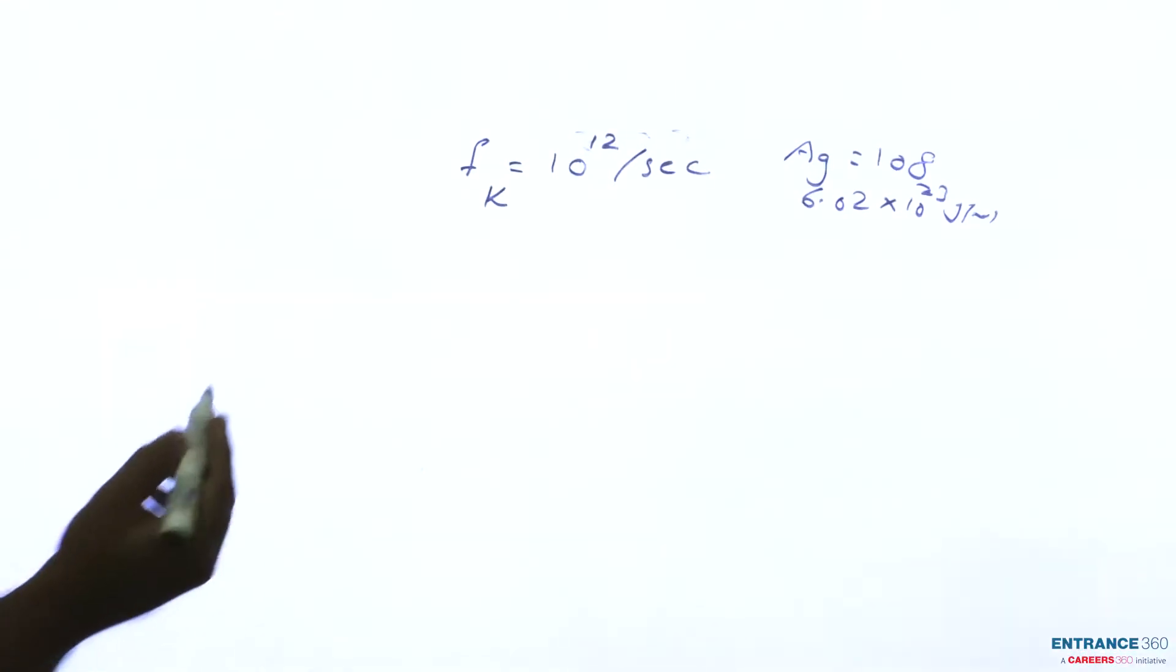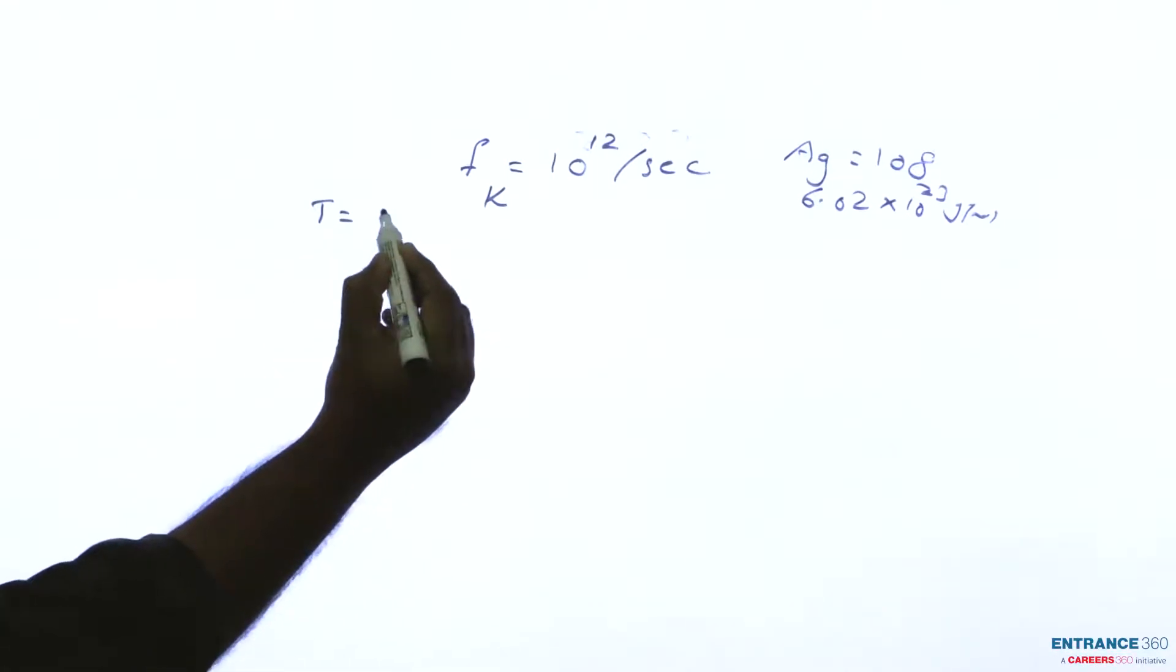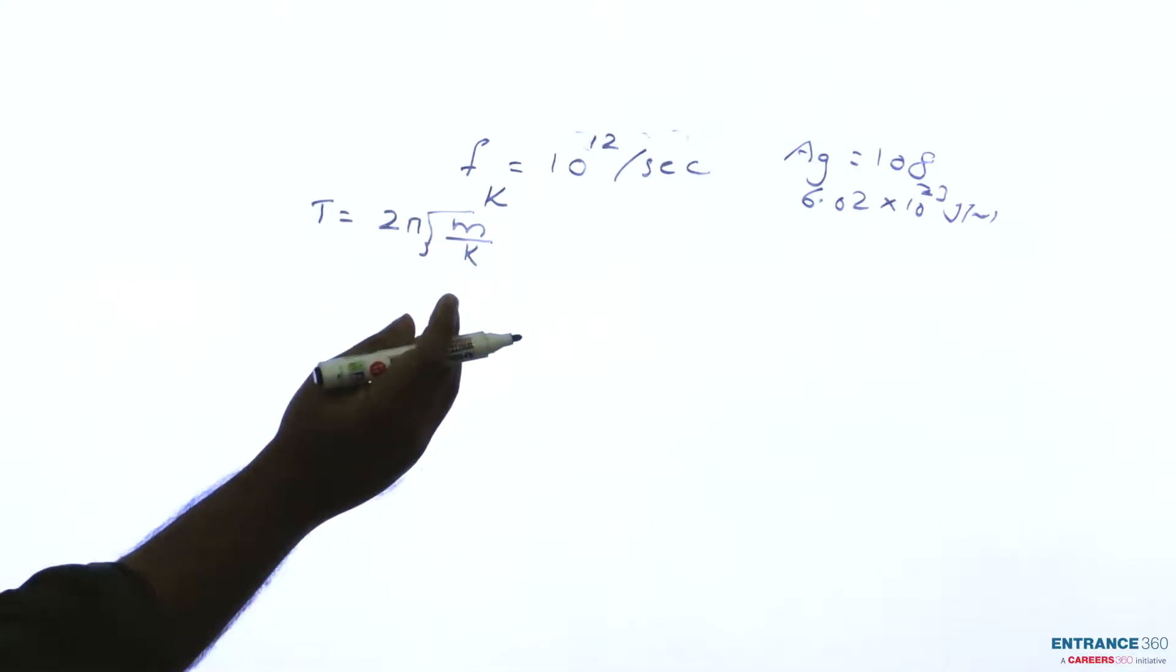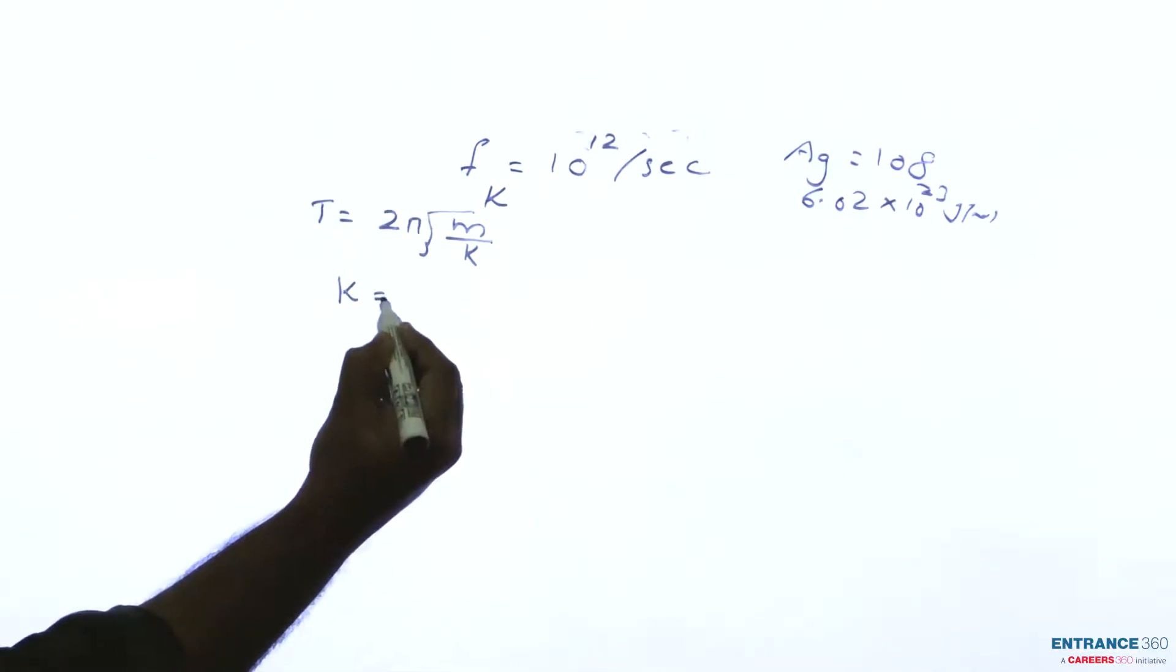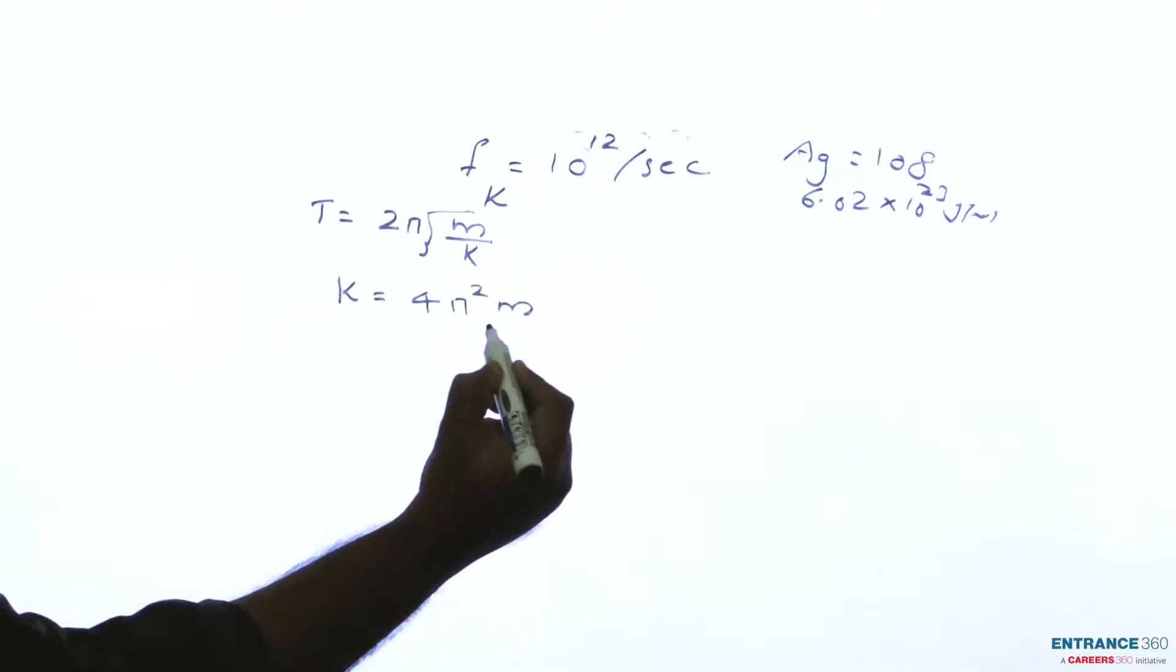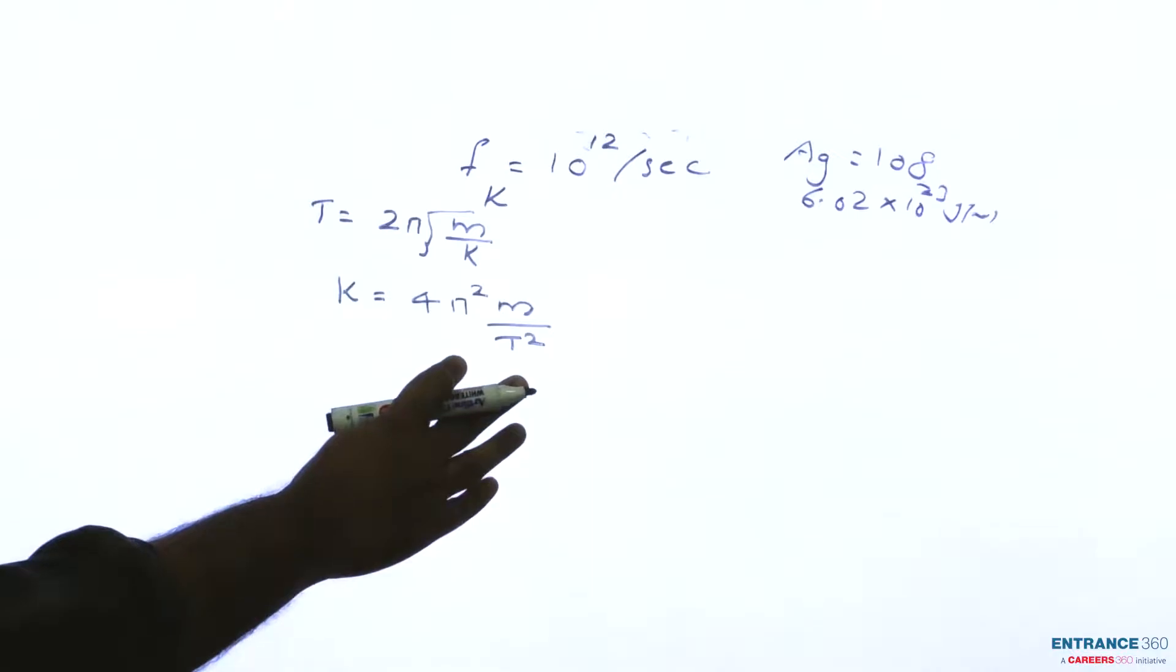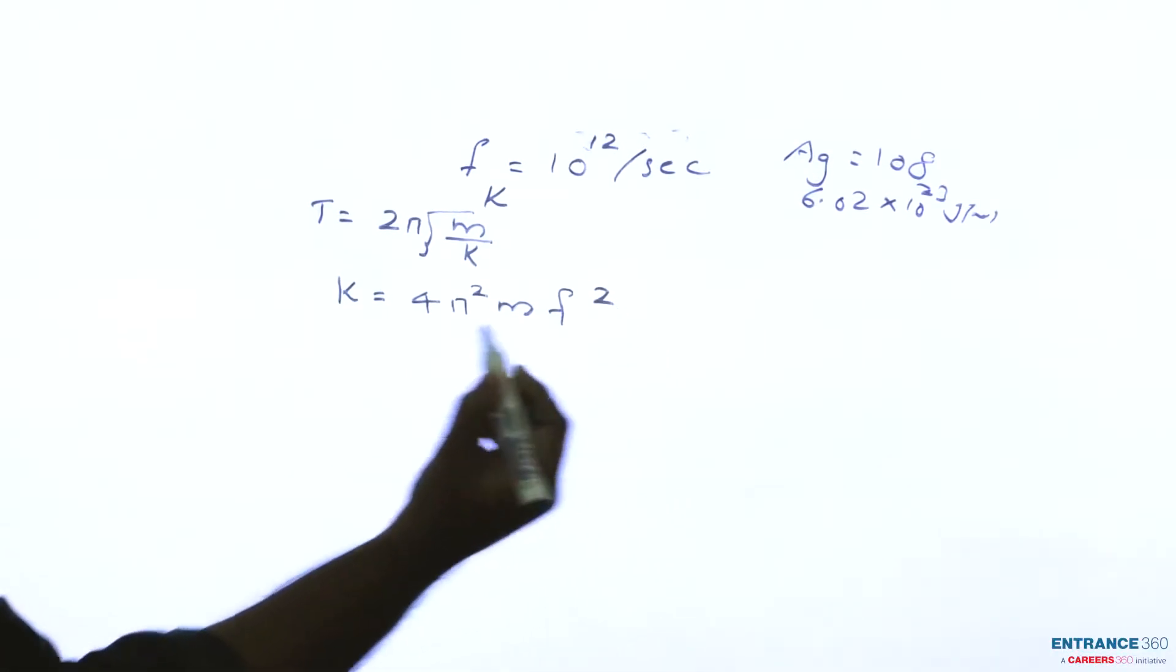Let's see how to solve this. Time period for a spring mass system T equals 2π into root of m by K. We have to find the value of K. Squaring both sides and rearranging we will get K equals 4π square m by t square. 1 by t square we can write it as f square.